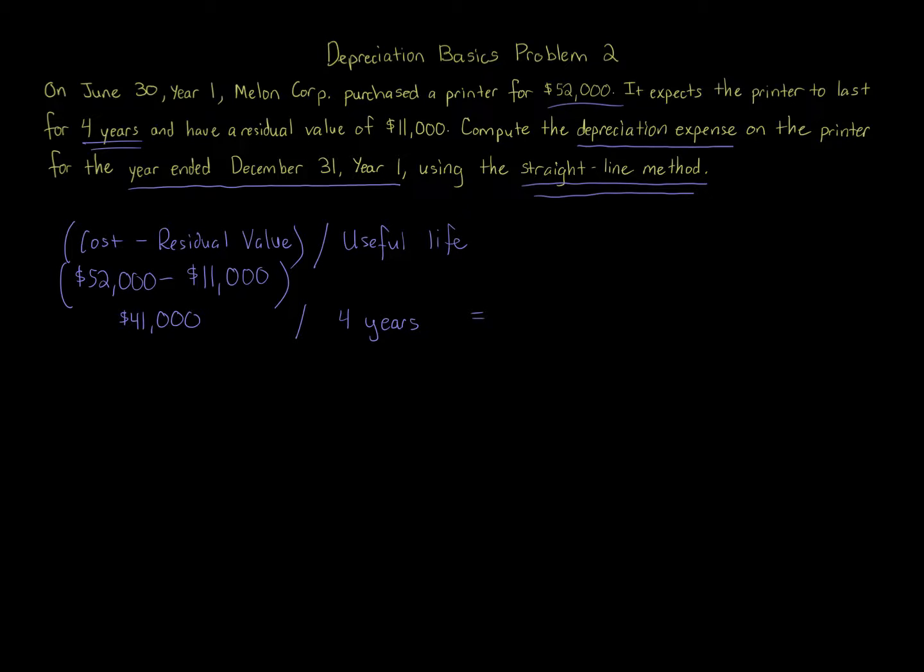You might recall from a previous problem, we had to look at when the asset was placed in service. It was placed in service on June 30th, year one. Unless you're told otherwise, assume the company uses a calendar year—January 1st to December 31st. We're asked to calculate the depreciation expense for the year ended December 31st, year one. We're not going to do a full year—that's wrong. It's placed in service on June 30th, so we're just going to calculate half the year's worth of depreciation.